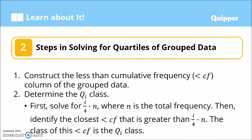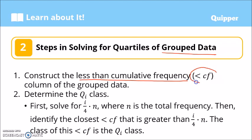So how do we solve the quartiles for grouped data? Grouped data means the data is no longer raw data — it's already in table form with a frequency distribution and has class intervals. Here are the steps in solving for the quartiles of grouped data. First, we construct the less than cumulative frequency through the frequency distribution table.